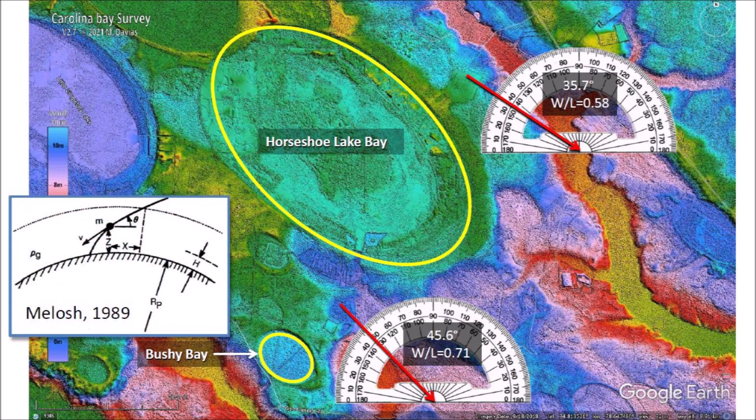During re-entry through the atmosphere, a large projectile is harder to slow down by atmospheric friction than a smaller projectile with a similar initial trajectory. For this reason, the smaller projectile strikes the ground at a more vertical angle of impact, thus creating a more circular crater. These angles can be used in ballistic equations to determine the launch speed and the trajectories of the ice boulders that made the bays.